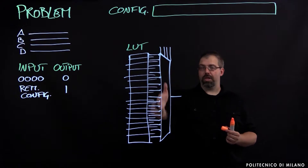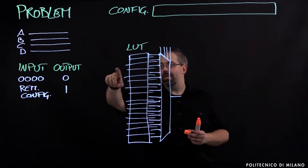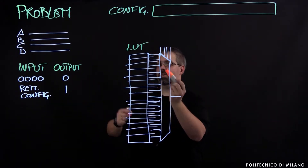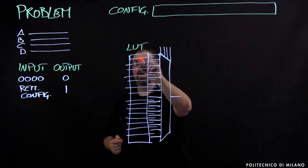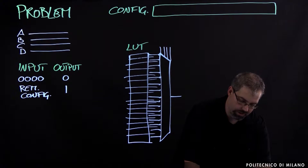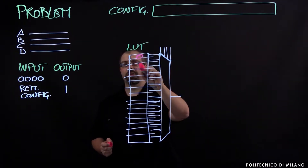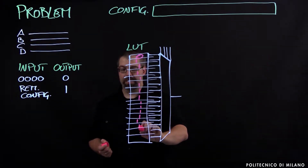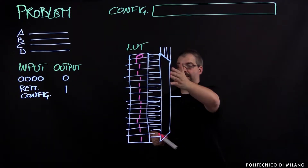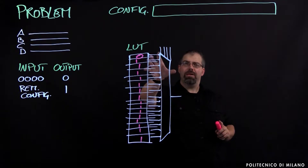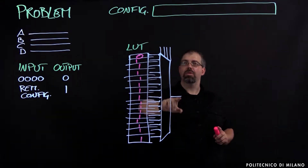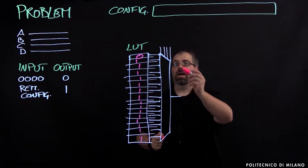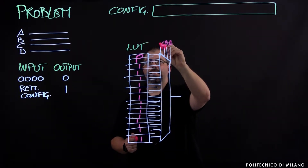We know that the configuration of the lookup table is basically done by storing those values. So we're going to have 0 in the line 0, 0, 0, 0 — which is this one — and 1 in all the others. So we'll have 0 here and 1, 1, 1, 1, 1, 1, 1, 1 for all the remaining cells. We have a multiplexer here that will properly combine the cell with the output according to the values provided as inputs A, B, C, D.